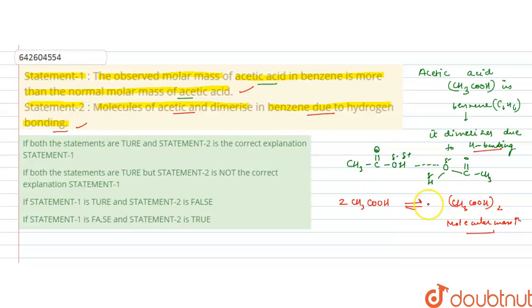Due to dimerization - dimerization of acetic acid in benzene - due to this dimerization which takes place due to hydrogen bonding, its observed molar mass in benzene is more than that of the molar mass of acetic acid. So both these statements are correct and statement 2 is correctly explaining statement 1. So A is the correct answer for this question.